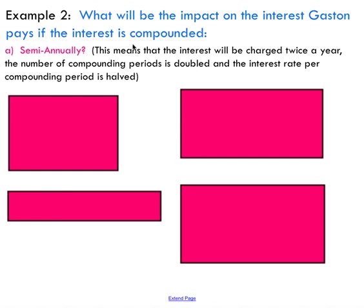The second example asks: what is the impact on interest if it's compounded semi-annually? Compounding allows us to break up the interest in different ways over the course of the year. Semi-annually means two times a year, so interest is charged twice a year and the number of compounding periods is doubled. As a result, the interest rate is divided by two, because we're paying half of the interest rate each time throughout the year.